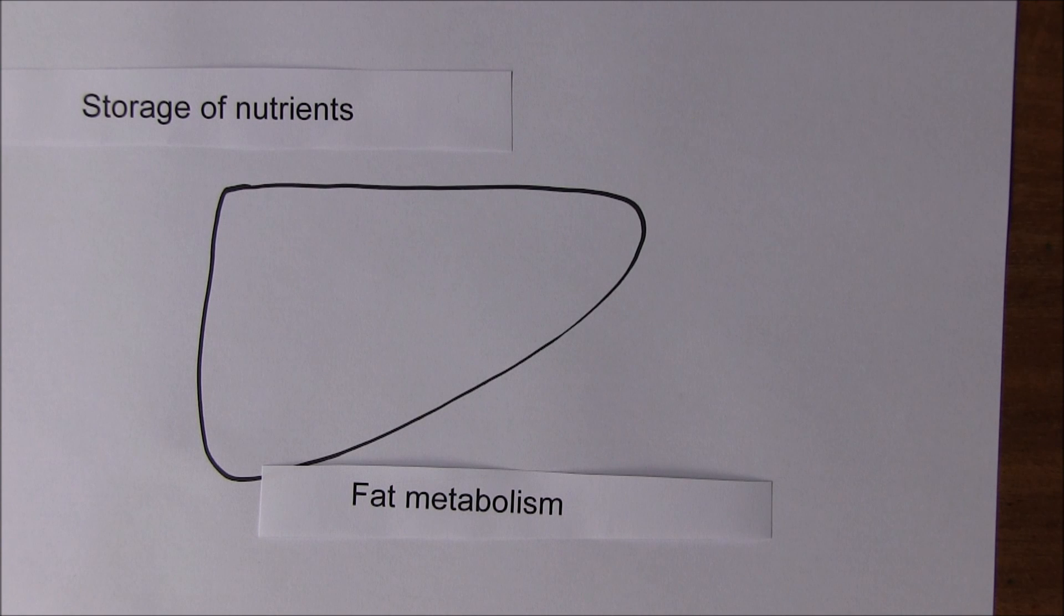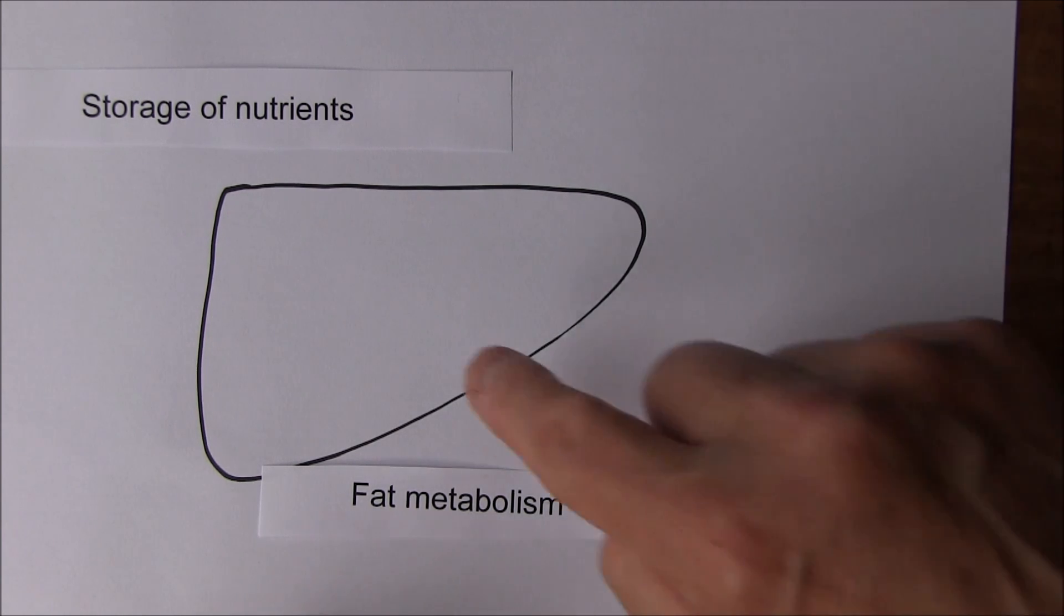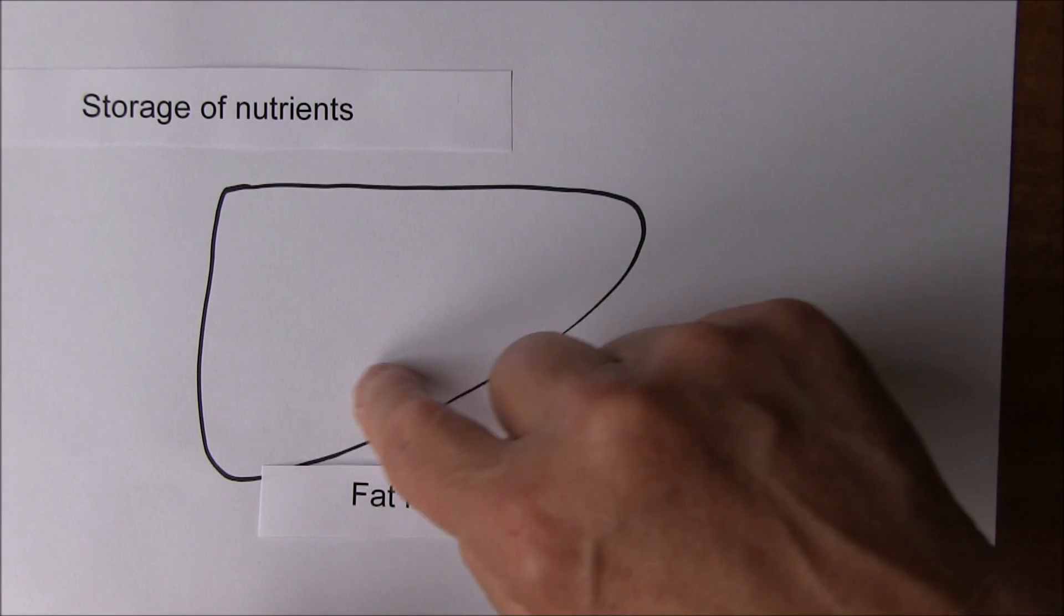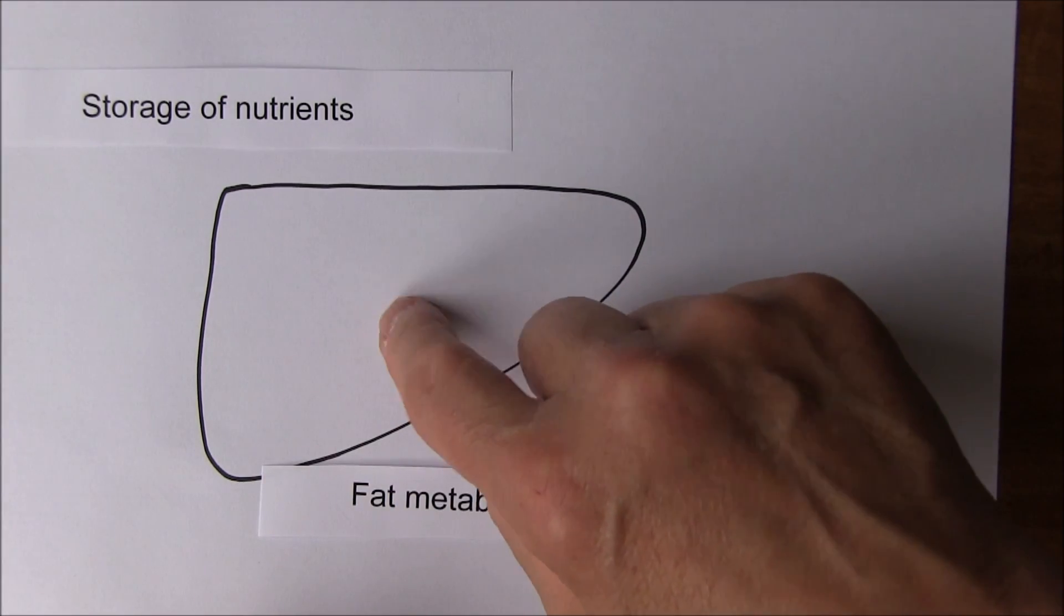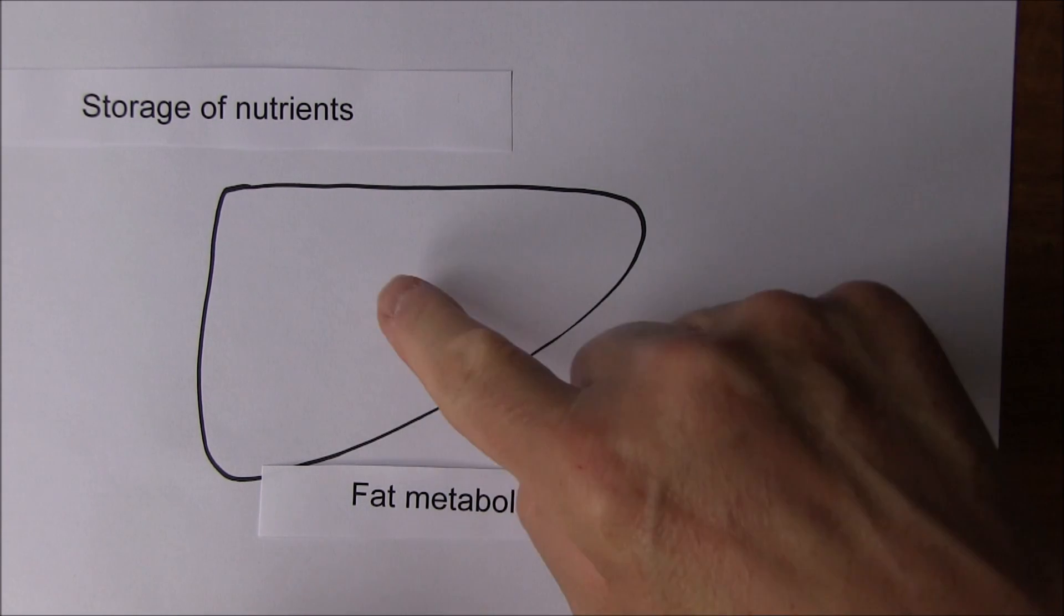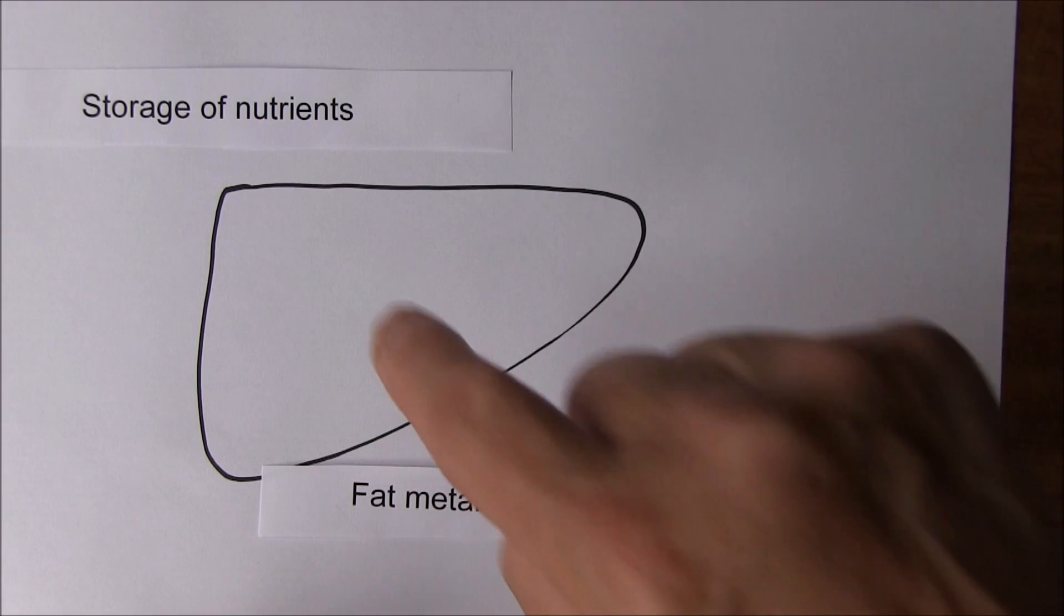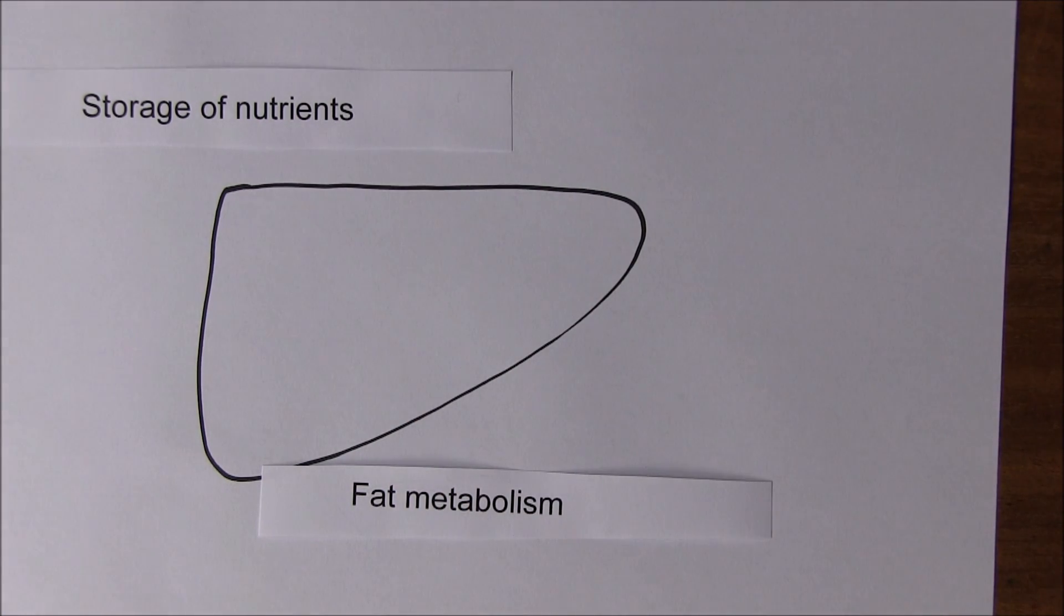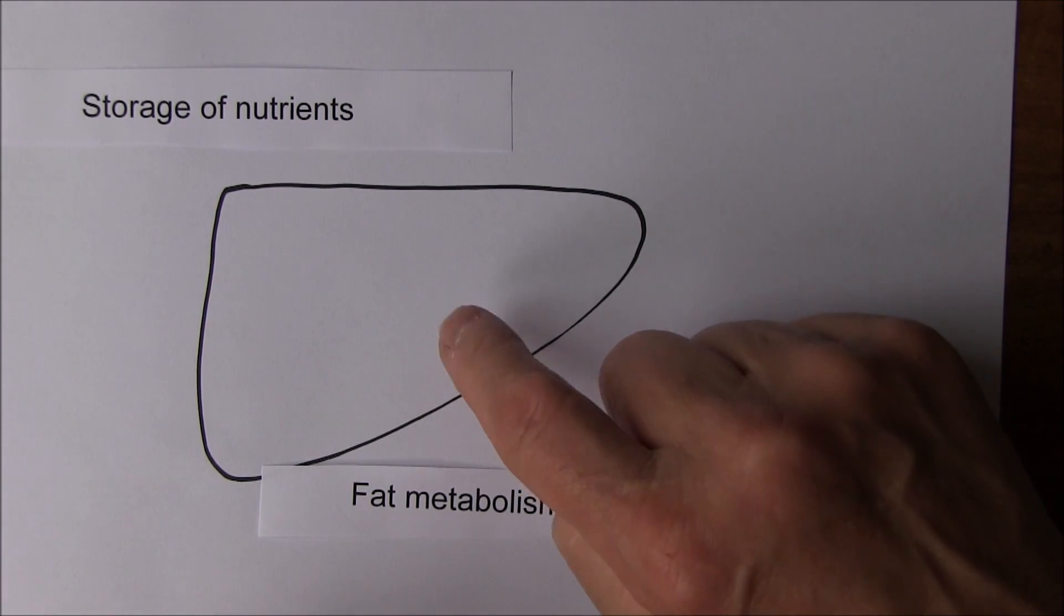If you want to put on lots of fat, you could do that by eating huge amounts of fat or by eating huge amounts of protein or indeed large amounts of carbohydrate, because the energy component in proteins and carbohydrates can be converted into fatty acids by the liver for longer-term storage. And this of course is good because it's a survival mechanism.